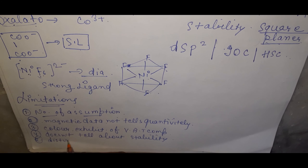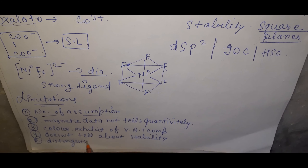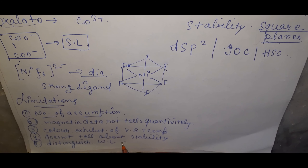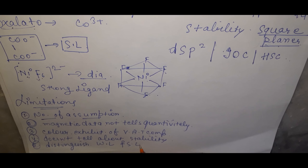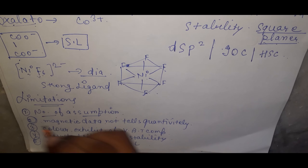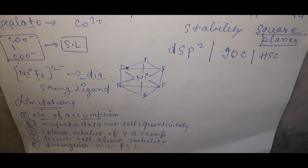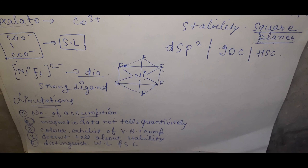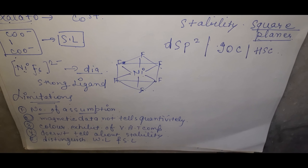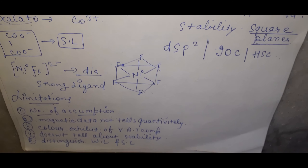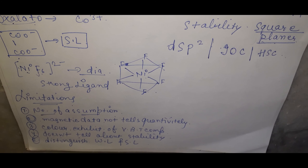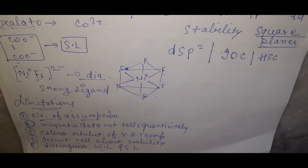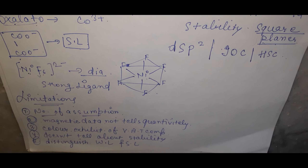Fourth: VBT does not explain the stability of coordination compounds. Fifth: it cannot distinguish between strong and weak ligands. Sixth: VBT cannot explain why some compounds are tetrahedral and others are square planar.